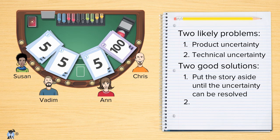Or consider using a range if reducing the uncertainty will take more effort than you want to or can invest. If team members ask the product owner "what type of bear — koala bear or grizzly bear?" and the product owner can't say, your best option is to write down 5 to 100.